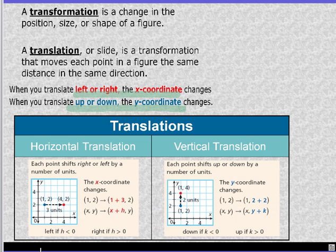Each point in a horizontal translation shifts right or left by a fixed number of units. So the x-coordinate changes. The y-coordinate doesn't. It shows you if you shift three units to the right, you're going to add three to your x-coordinate. Here's the general rule: (x+h, y). Y doesn't change. It goes right if h is greater than zero. If it's negative, it's going to be a subtraction and it's going to move it left.